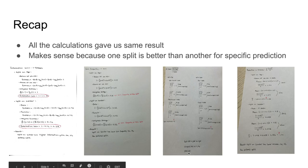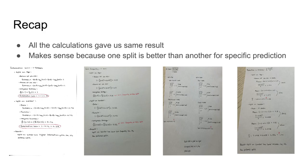To recap everything, we can see that all the calculations gave us the same results: the split on gender is a better split than the split on age. This makes sense because overall there's one split that's better than another in this specific prediction. If these calculations gave us different results — for example, if information gain said the split on gender is better while chi-squared said the split on age is better — then there would be a problem and it wouldn't make sense, because the split on gender can only be better than the split on age for this specific prediction. Thank you so much for watching, and I hope you enjoyed the video.